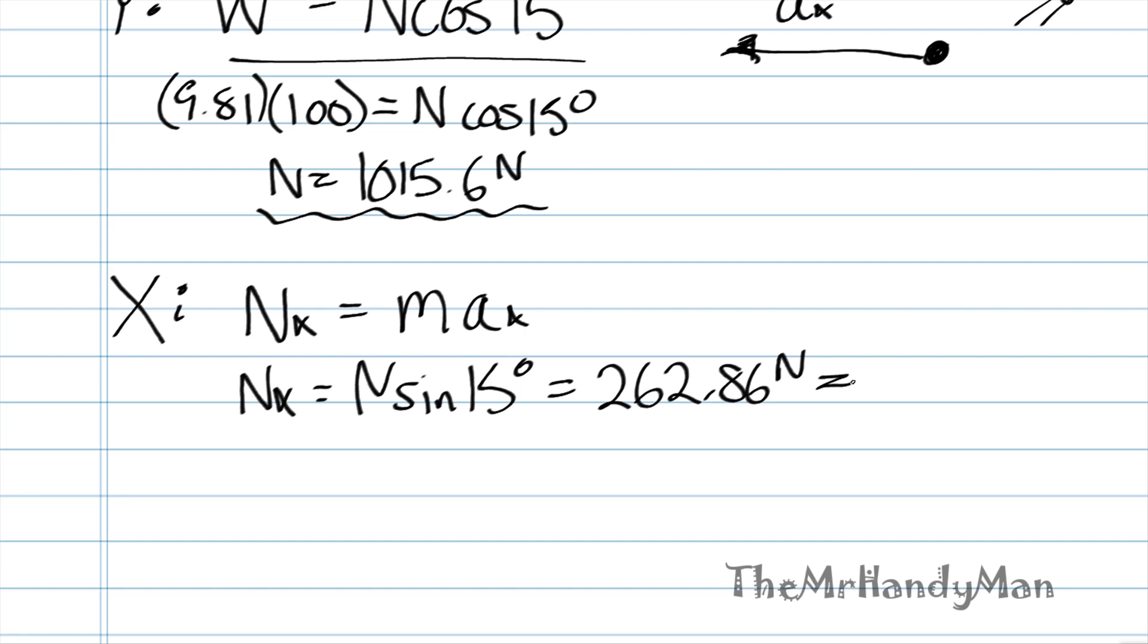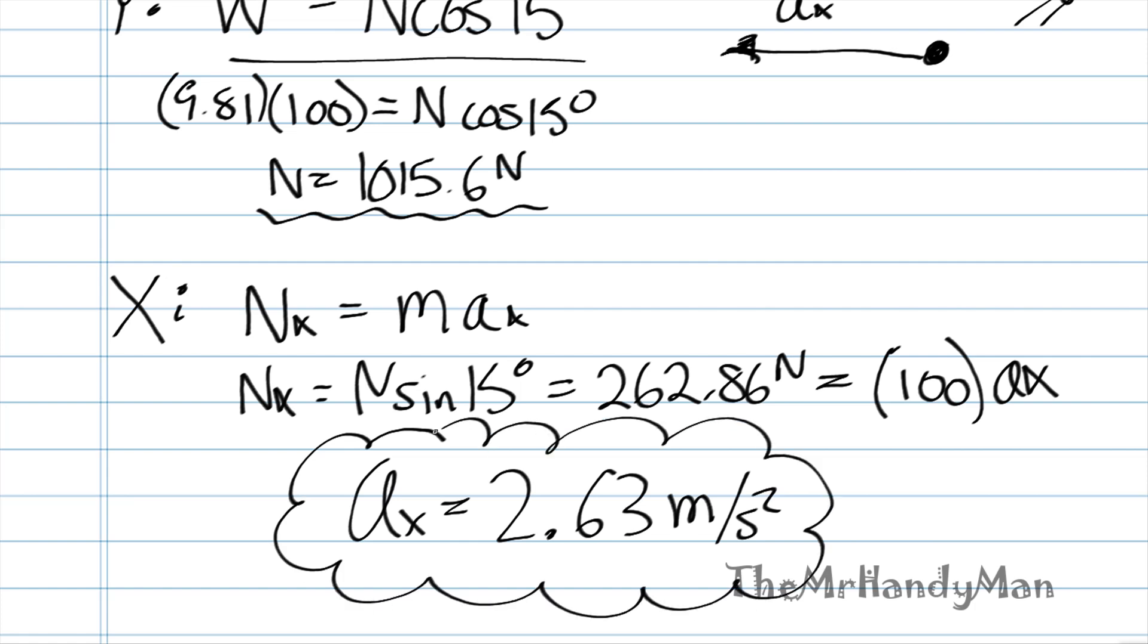That will equal M A, which is going to be 100 times your AX. And we can actually solve for AX at this point. AX is equal to 2.63 essentially, meters a second squared. Perfect.